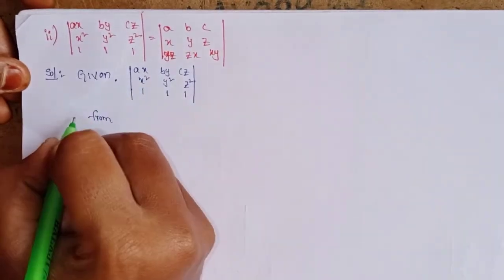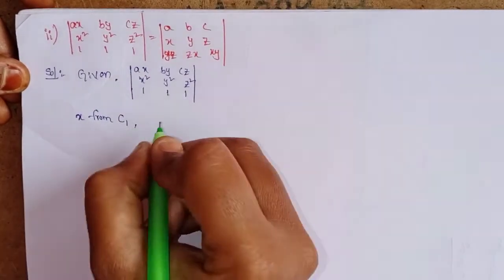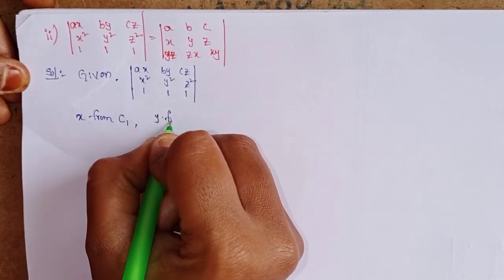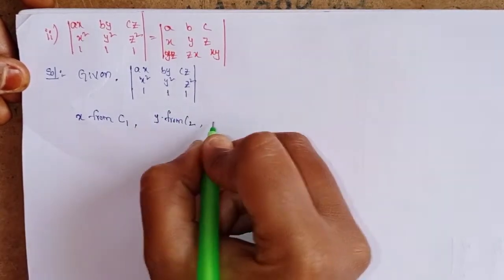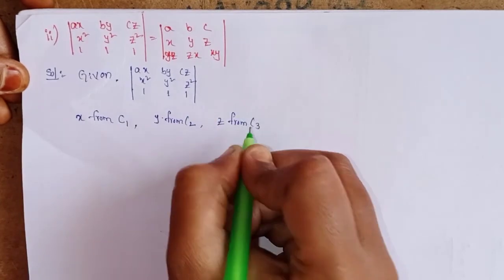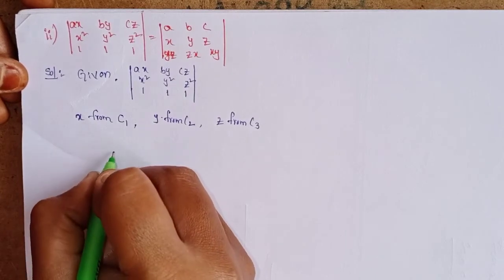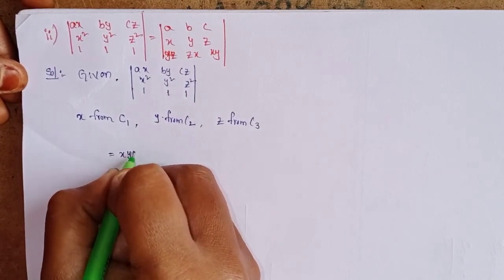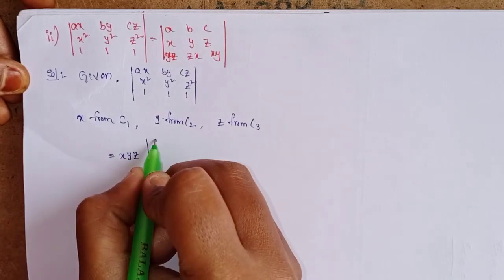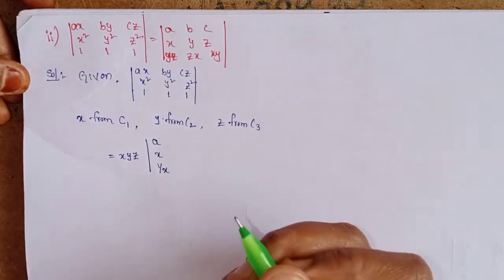From column 1 take common x; from column 2 take common y; from column 3 take common z. So xyz comes out, and inside we have [ax, by, cz; x, y, z; 1/x, 1/y, 1/z].